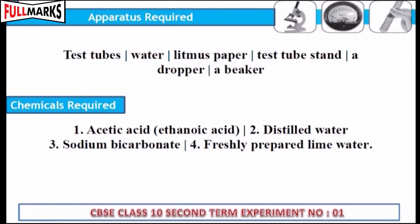Apparatus required: test tubes, water, litmus paper, test tube stand, a dropper and a beaker. Chemicals required: acetic acid, distilled water, sodium bicarbonate and freshly prepared lime water.